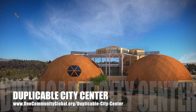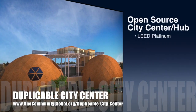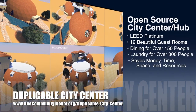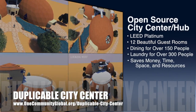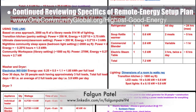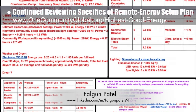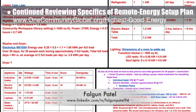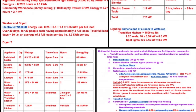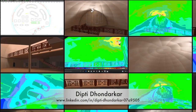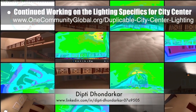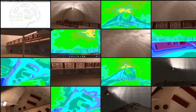One Community is also creating an open source duplicable city center designed to be LEED Platinum certified, provide 12 guest rooms, dining for over 150 people, and laundry and recreation space for over 300 people, all while saving money, time, space, and resources. Falguen Patil, mechanical engineer, completed his 4th week reviewing, running calculations, and updating specifics of the remote energy setup plan to update the highest good energy page. This week's focus was detailed energy needs calculations for the initial construction equipment, transition kitchen, and ultimate classroom. Dipti Dondarkar, electrical engineer, continued her 51st week of work on lighting specifics for the city center, focusing on testing multiple angles and finalizing the dining dome floodlight placement.